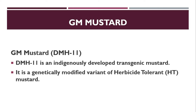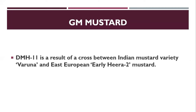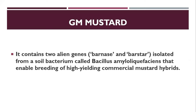DMH-11 is a cross involving the Indian mustard variety and HeLa-2 mustard from Eastern Europe. It is called EGM Mustard. There are two alien genes involved — Barnase and Barstar — which are derived from Bacillus amyloliquefaciens. This contributes to commercial yield improvement.